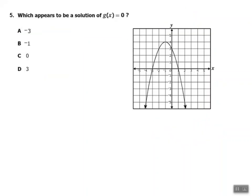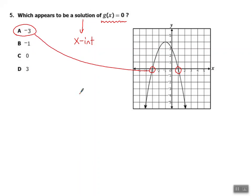Let's look at our final example: which appears to be a solution of G of X equals 0? This time they give us the graph, so we don't need Desmos. Solutions are the same things as X-intercepts. Looking at the graph, the X-intercepts are at negative 3 and 1. Negative 3 is one of our solutions — negative 1 doesn't work, 0 doesn't work, 3 doesn't work. Negative 3 is one of our solutions. Thanks for watching this video, and please practice all the other problems in this packet.